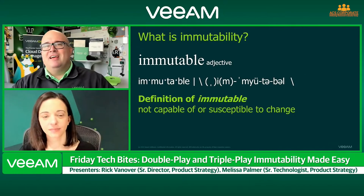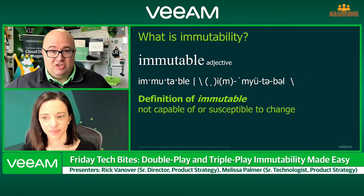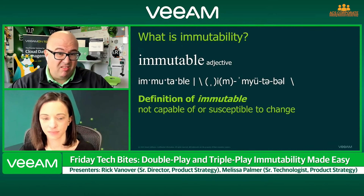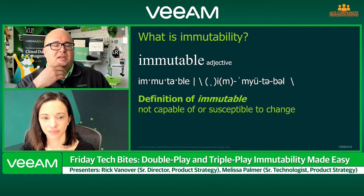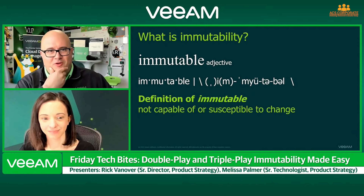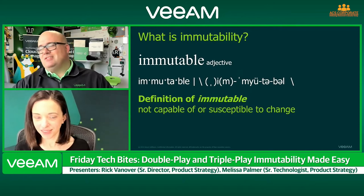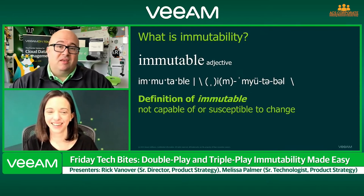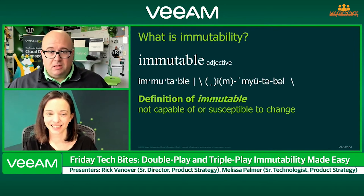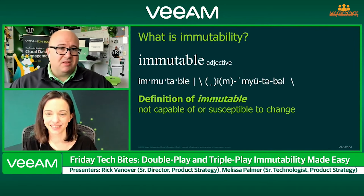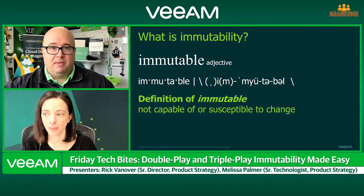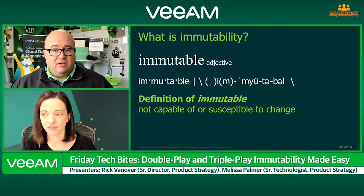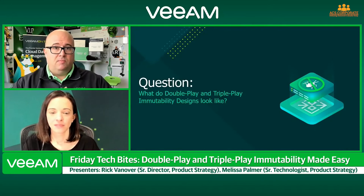As an industry we're always looking to give the market more options to be resilient against these threats. The topic today is double play and triple play immutability — I stole that from baseball. Basically, one of the most effective approaches in the market is immutable copies of backup data: something that's not capable or subject to change. Here at Veeam we have so many double play and triple play immutability options.